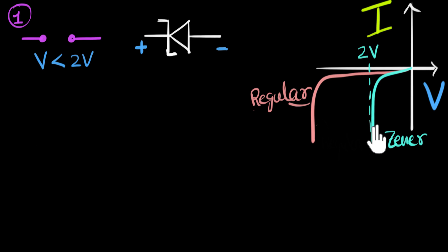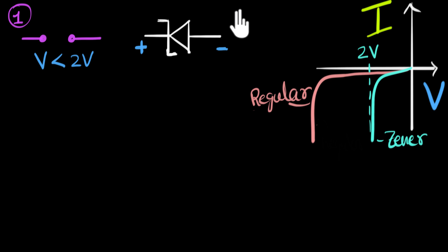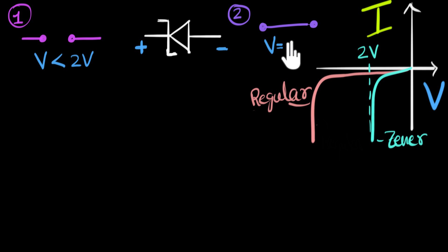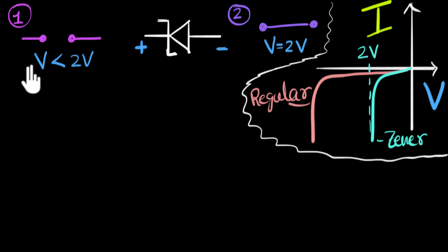Once you hit two volts, regardless of what current flows through it, the graph becomes almost vertical — the voltage pretty much remains constant, and a heavy current starts flowing. So we can assume that once the voltage hits two volts, the Zener diode behaves like a short circuit, because it offers extremely low resistance and readily allows the flow of charges. The voltage across it gets fixed at two volts. This is the VI characteristics of the Zener diode, and this is how we can interpret those characteristics.